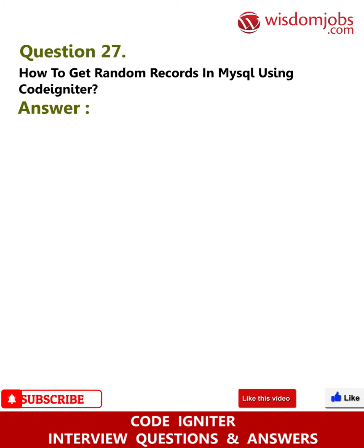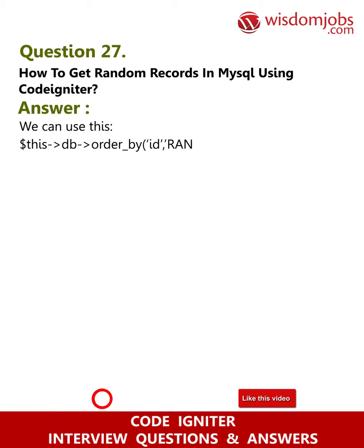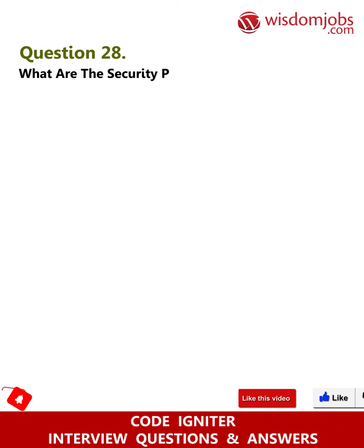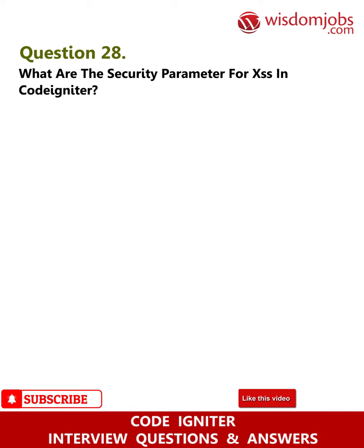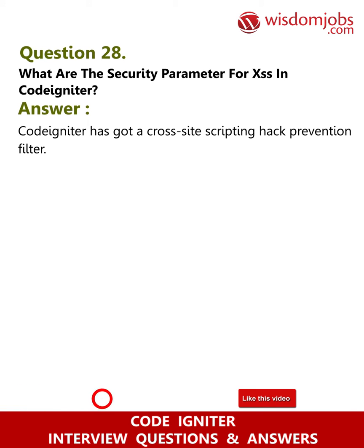Question 27: How to get random records in MySQL using CodeIgniter? Answer: We can use: $this->db->order_by('id', 'random'). Question 28: What are the security parameters for XSS in CodeIgniter? Answer: CodeIgniter has a cross-site scripting (XSS) hack prevention filter. This filter either runs automatically or you can run it on a per-item basis to filter all POST and cookie data.